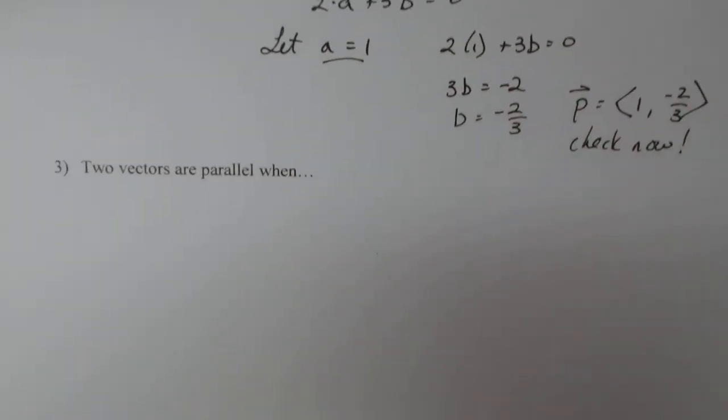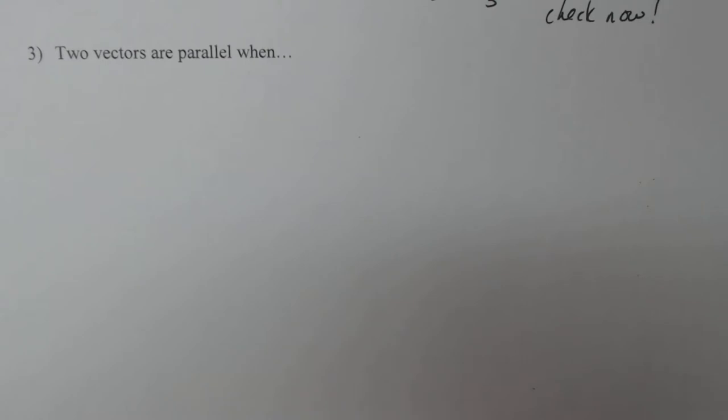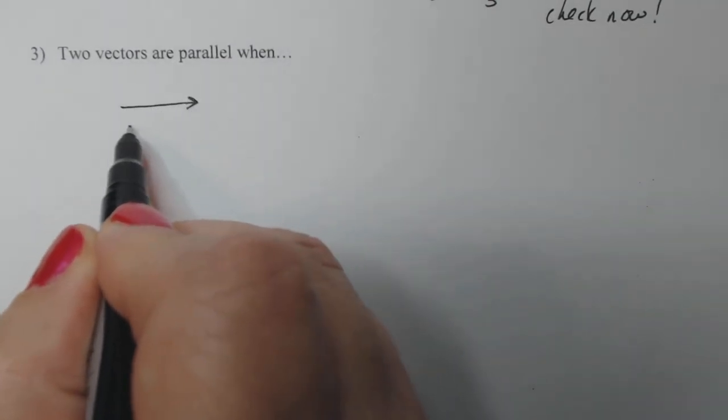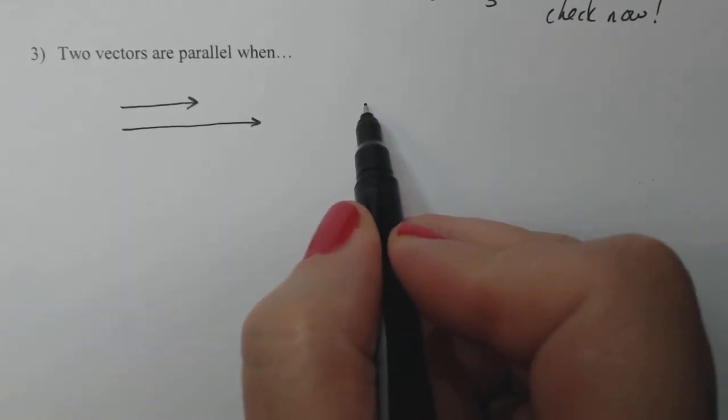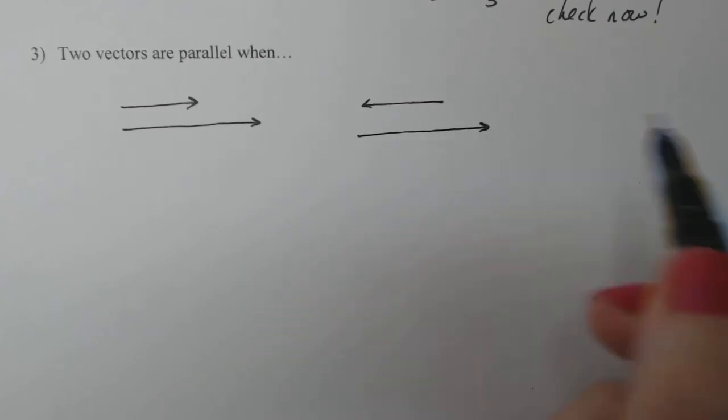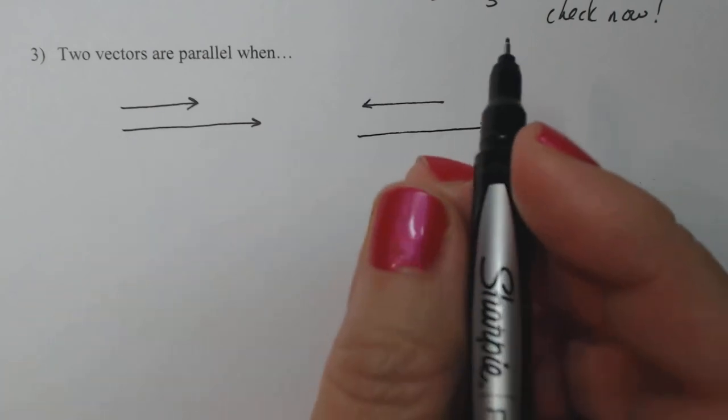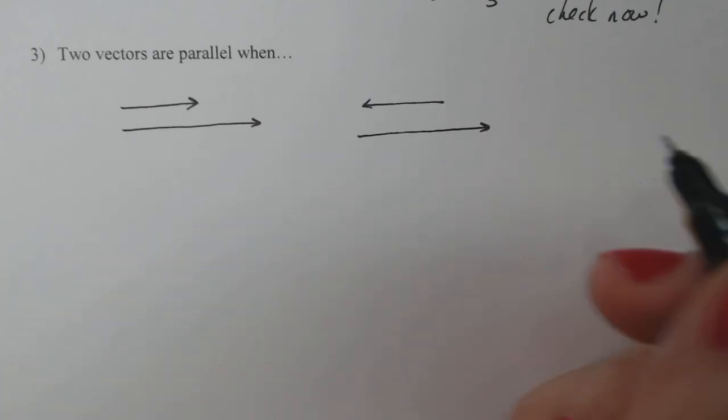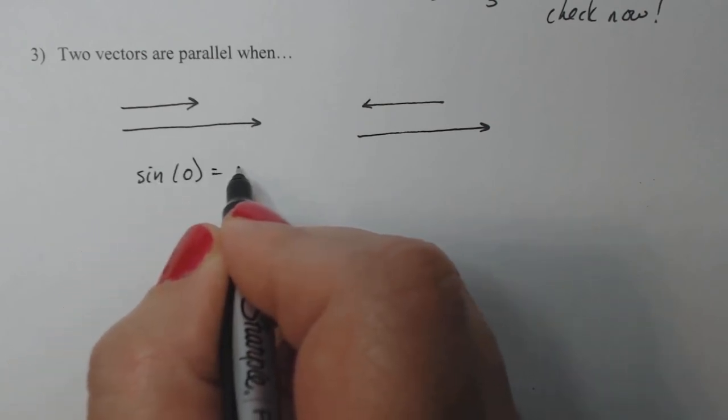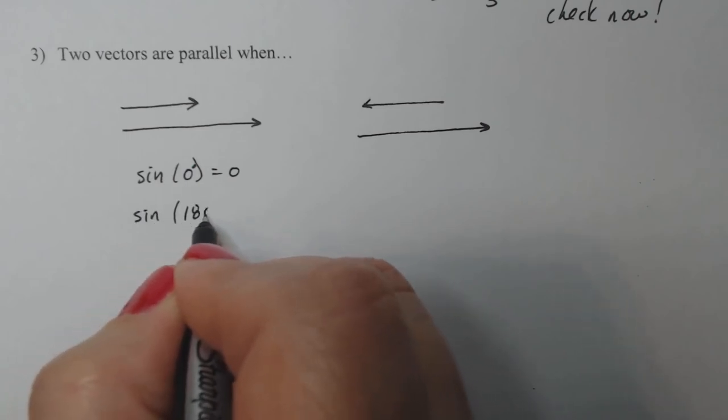All right, now number three. Two vectors are parallel when, okay. So if I have a vector here and I have a vector parallel to it, I can have parallel going on that way or I can have parallel going on this way. Either way, if you go online and look at this, they'll say their cross product is zero. But I tell you what, I don't want to mess with the cross product because technically it's not a scalar. Your cross product turns out to be the zero vector. That's kind of creepy.